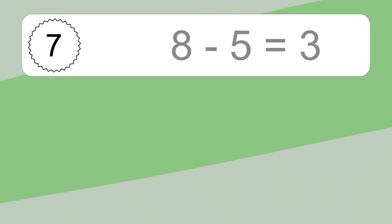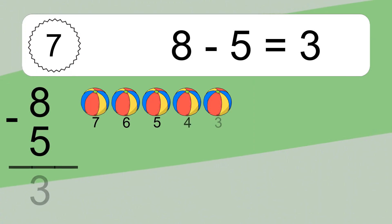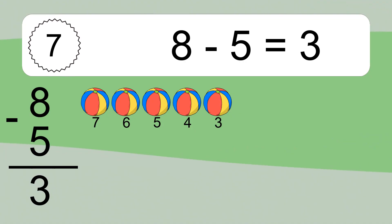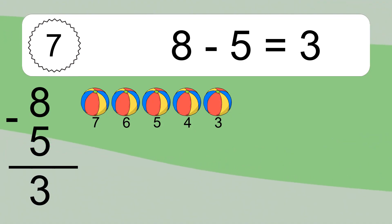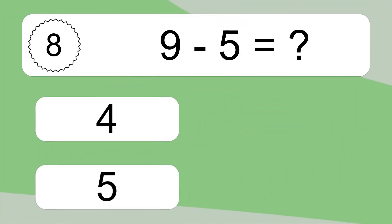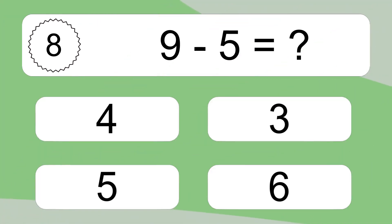8 minus 5 equals what? 8 minus 5 equals 3. Let's count it: 7, 6, 5, 4, 3.